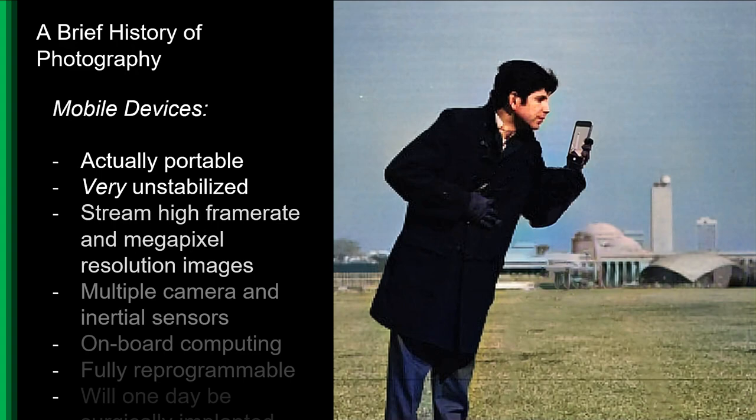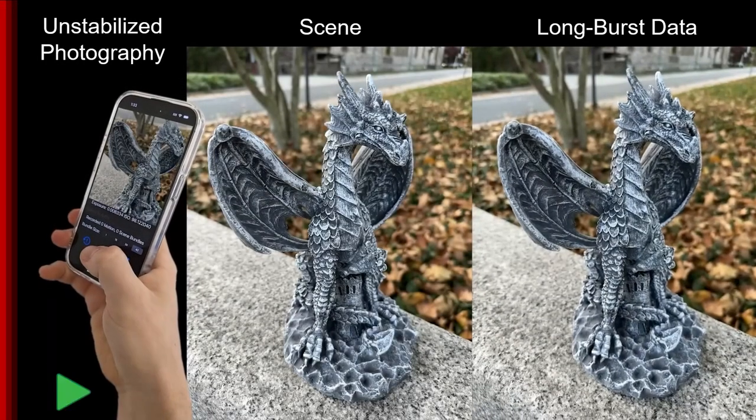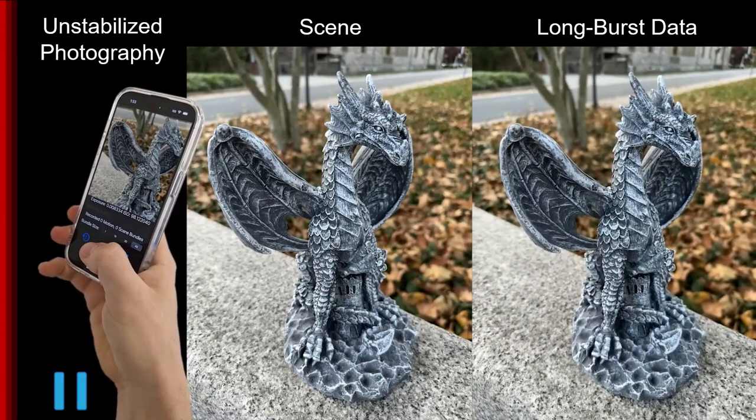But in reality, cell phone photography doesn't look like this. It looks more like this, the view constantly shifting from the natural instability of your arm position.